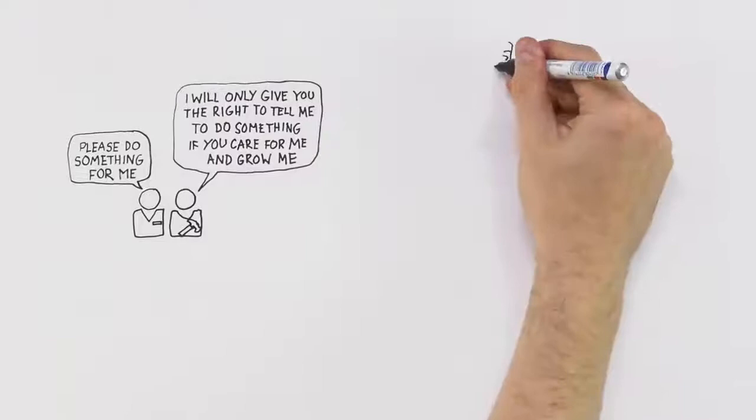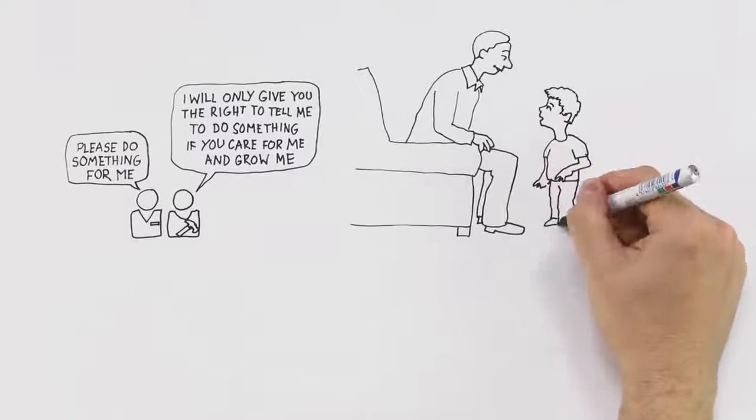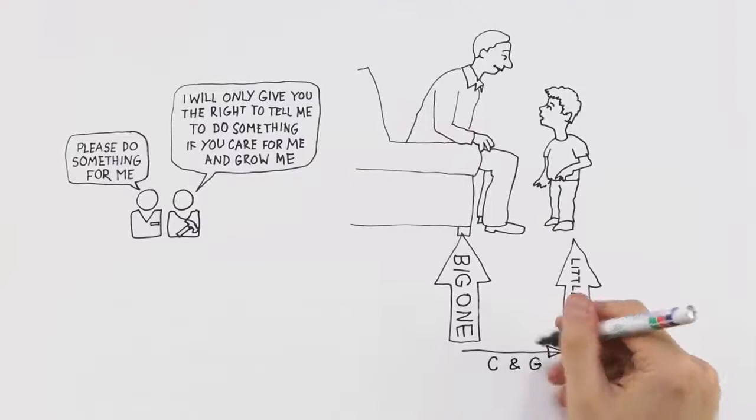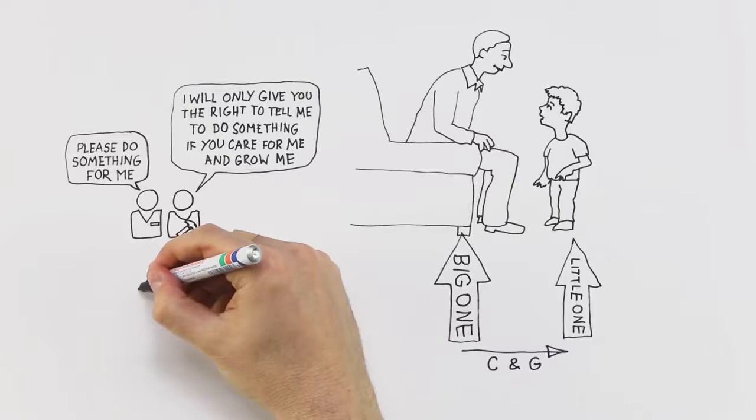The first relationship of power you have with another person in your life is with your parents, and there are two people in that relationship: there's a big one and there's a little one. The job of the big one for the little one is very specific, it's care and growth. In other words, the job of the big one for the little one in any relationship of power is care and growth.